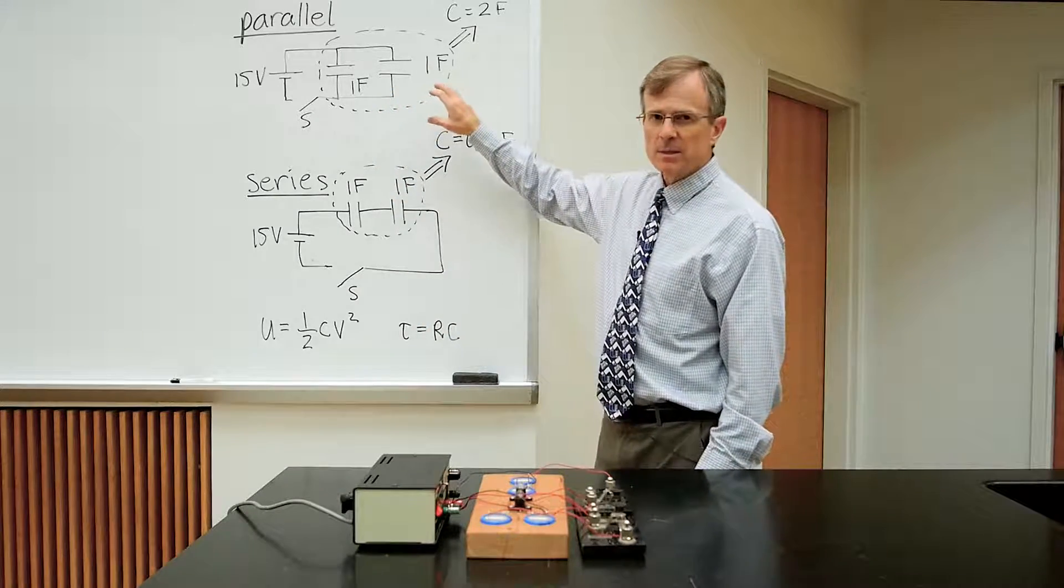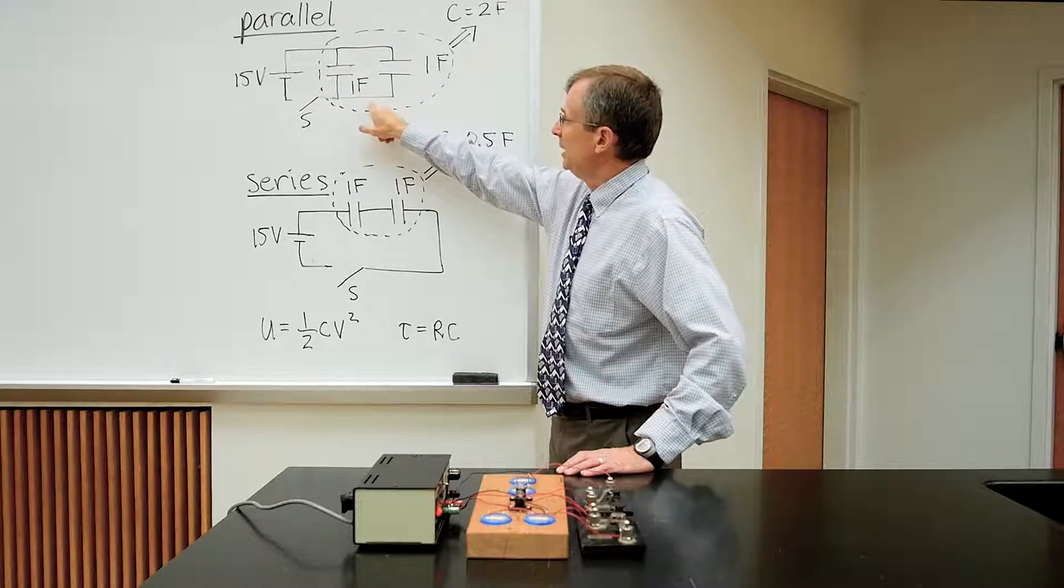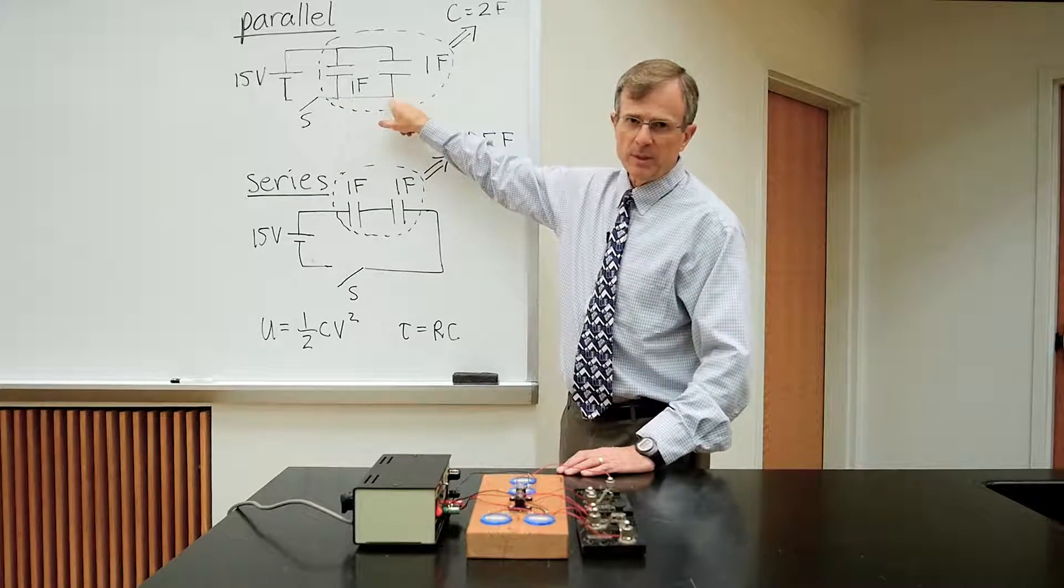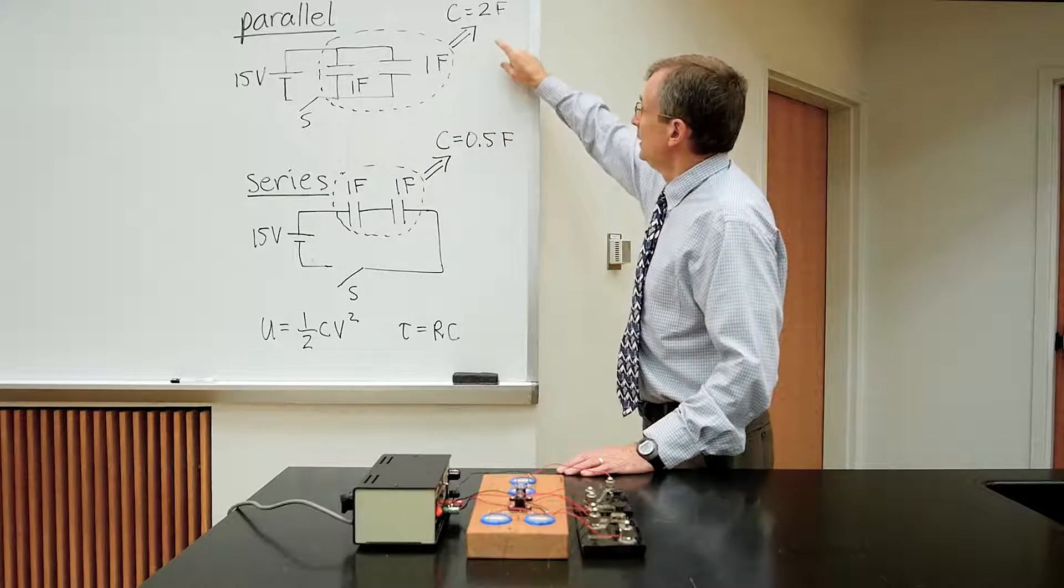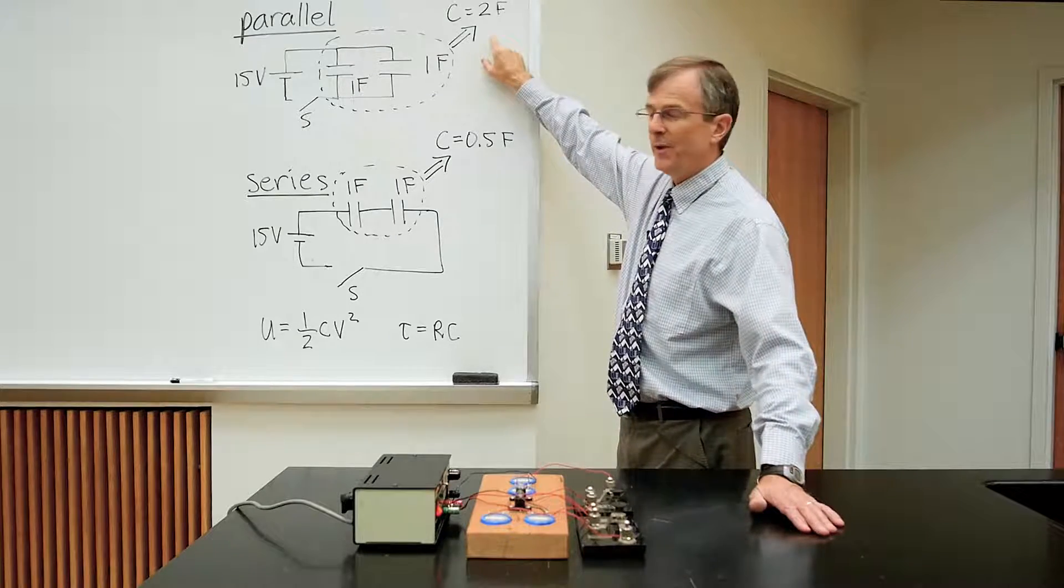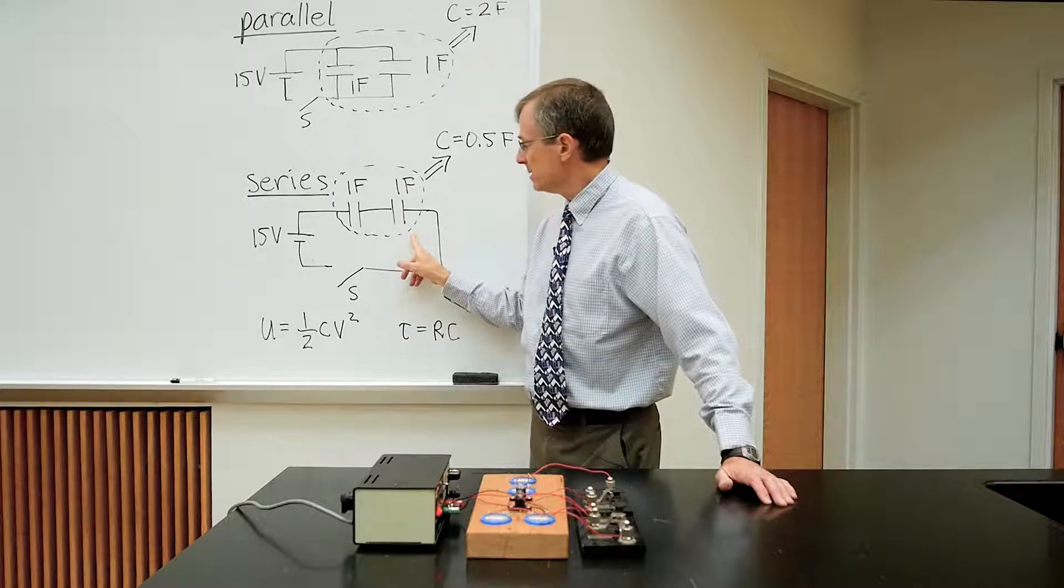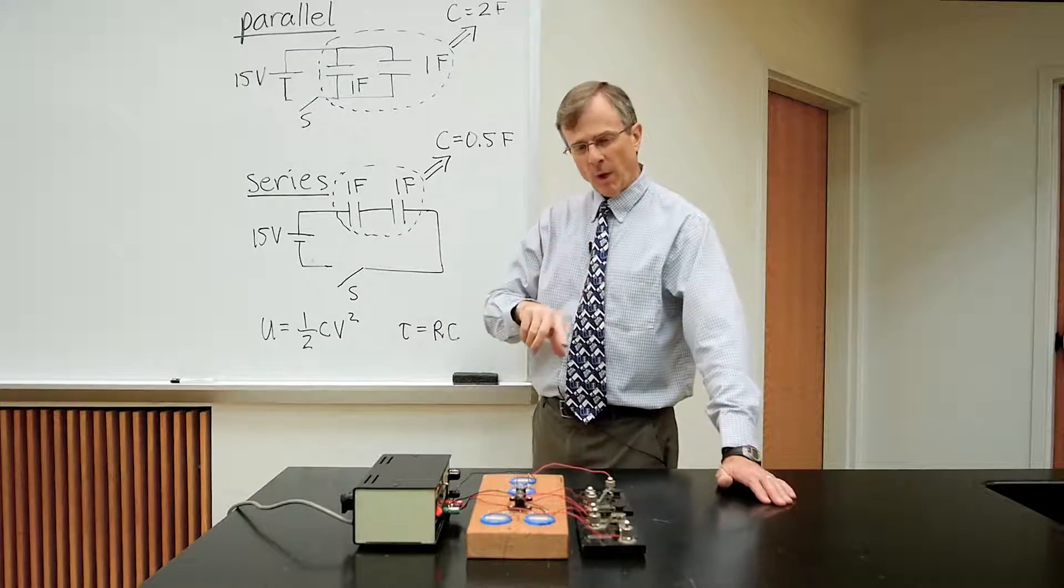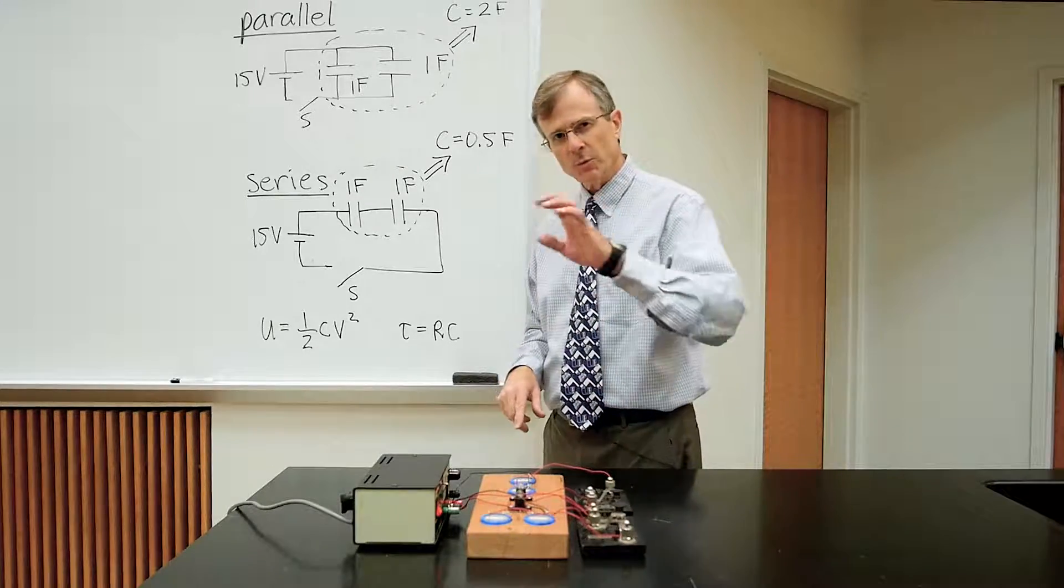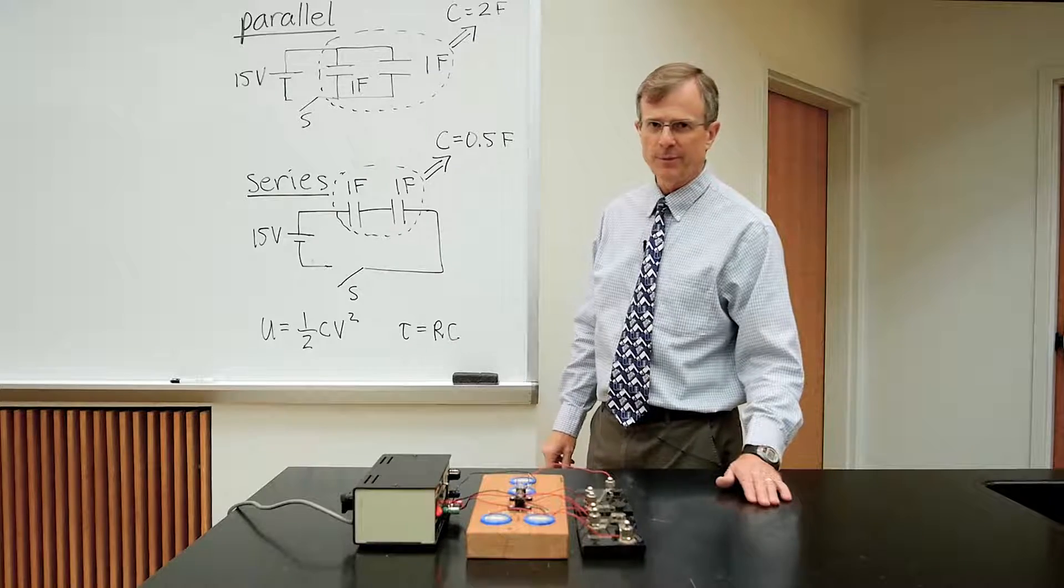And what we've done in class is to understand what the equivalent capacitance would be. For this parallel circuit, the two capacitors are in parallel with each other, actually add together to form one effective capacitor that's two farads. As opposed to two capacitors that are in series, which you have to add up 1 over this capacitance, plus 1 over that capacitance, equals 1 over the equivalent capacitance, which gives you an equivalent capacitance of 1 half a farad.